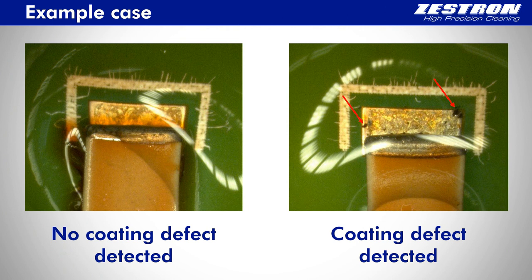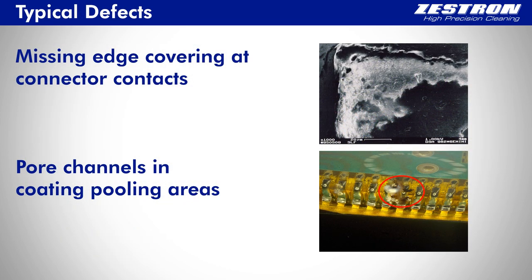On the right hand side, you can see an example of smaller coating defects due to flux residues on a connection part of a ceramic capacitor. The connection part on the left hand side shows no color reaction. Typical defects which can occur during the coating process are a missing edge covering on the solder joints and connector contacts, or poor channels in coating pooling areas.